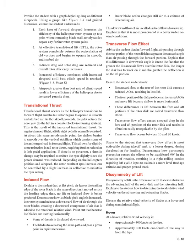Transverse flow effect: in forward flight, air passing through the rear portion of the rotor disc has a greater downwash angle than air passing through the forward portion. This difference in downwash angle is due to the fact that the greater the distance air flows over the rotor disc, the greater the deflection on the aft portion. Downward flow at the rear of the rotor disc causes a reduced AOA, resulting in less lift; the front portion produces an increased AOA and more lift because airflow is more horizontal. These differences in lift between the fore and aft portions are called transverse flow effect. Transverse flow effect causes unequal drag and results in vibration easily recognizable by the pilot. It occurs between 10 and 20 knots, and is most noticeable during takeoff and, to a lesser degree, during deceleration for landing. Gyroscopic precession causes the effects to be manifested 90 degrees in the direction of rotation, resulting in a right rolling motion requiring left cyclic input.